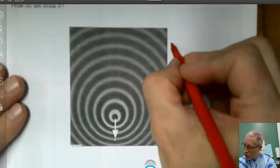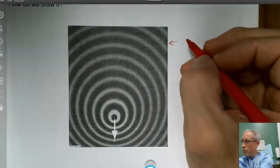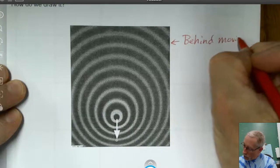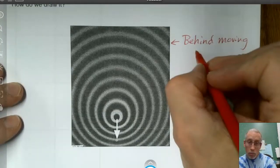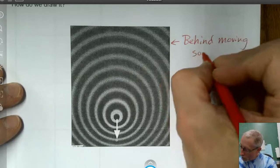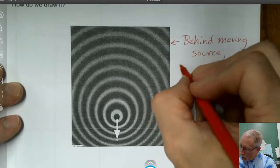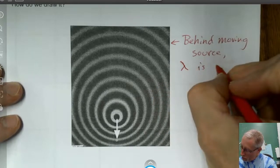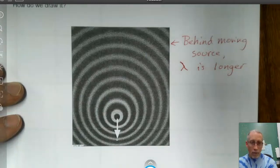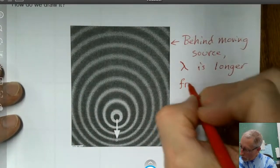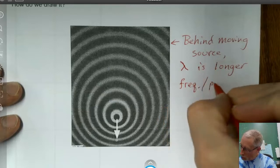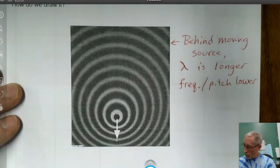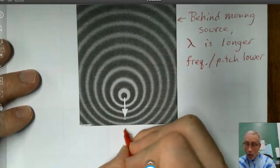Let me describe both parts of this. Behind the moving source, the source of the wave would be whatever's making the wave. It could be an ambulance, it could be a car horn. We have the wavelength, remember the symbol lambda, is longer, more spaced out. And so the frequency or pitch is lower there.